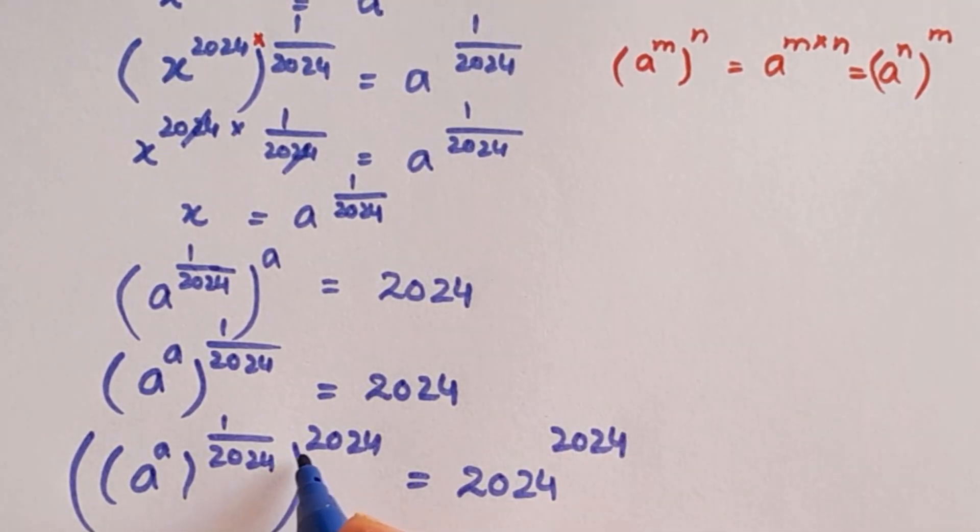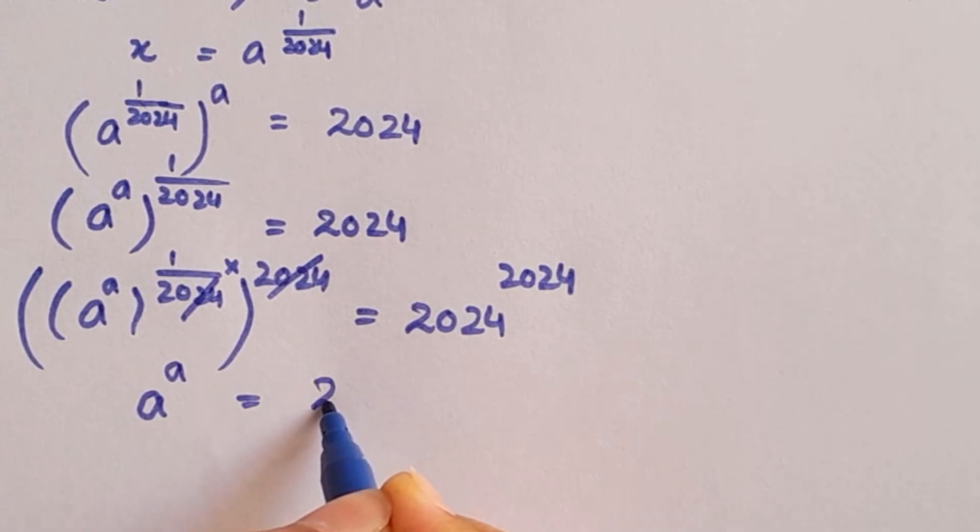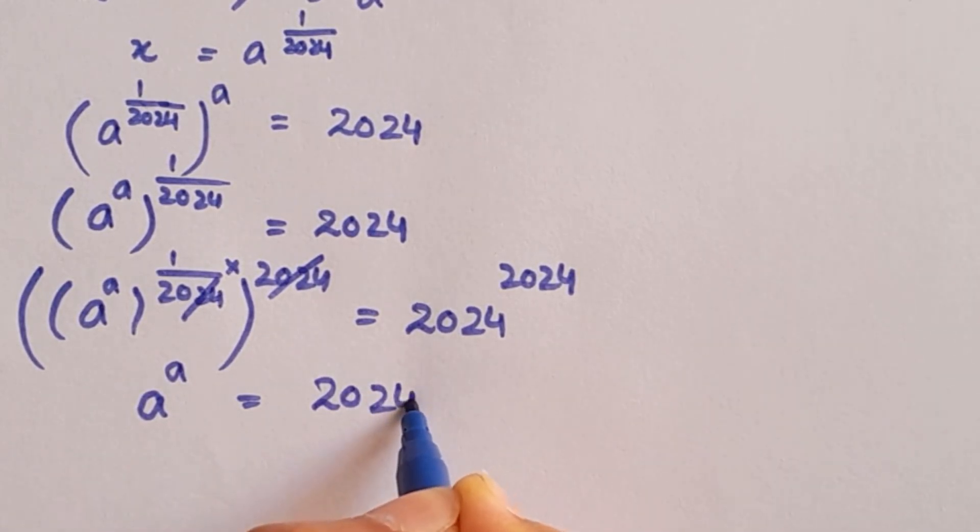As these two are multiplying, this and this will be cancelled out. We are left with a to the power a equals 2024 to the power 2024.